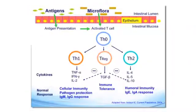This is an oversimplification, of course, of the fact that in the lumen we have antigens and microflora, through which a number of mechanisms — and what we're now understanding is how fascinating this bacterial-epithelial crosstalk is — ultimately modulate our immune response.